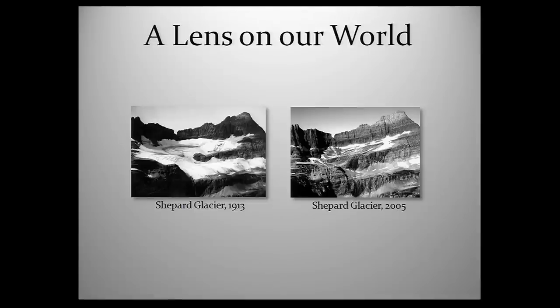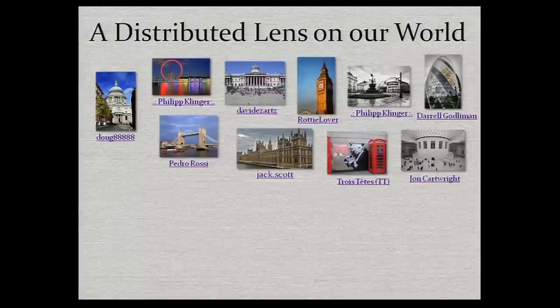Every city, every landmark, every important event has been captured many, many times, as well as lots of unimportant things like cats. Photos have always been an effective way of communicating information about our world in science — for instance, how are glaciers changing over time? But we're seeing this data source multiplied a billion fold, and we can think about this distributed lens on our world by virtue of all these people taking photos.